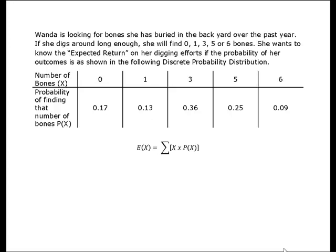So she wants to know the expected return she's going to get on her digging efforts if the probability of her outcomes, i.e., the number of bones she finds, is as shown on this discrete probability distribution.